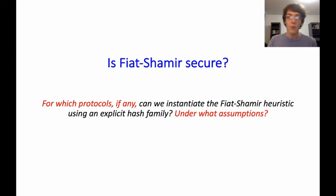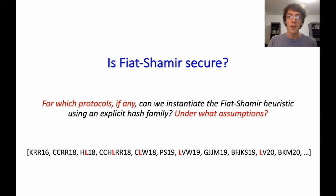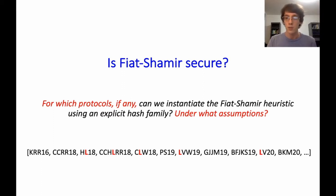On the other hand, there are strong counter-examples in the standard model: some interactive protocols such that no matter what efficiently computable hash function you use for Fiat-Shamir, the resulting non-interactive protocol will be unsound. This is a setting where random oracles and real hash functions seem to be really different. The question is: for which protocols can we actually instantiate Fiat-Shamir using a real hash function, and what assumption on the hash function suffices?